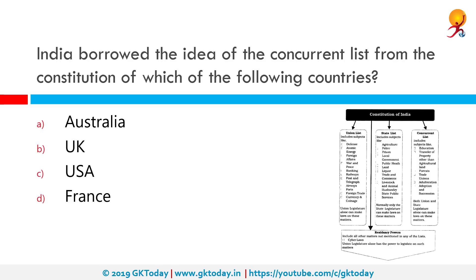India borrowed the idea of the concurrent list from the constitution of which of the following countries? The correct answer is Australia. The concurrent list, or List 3 of the 7th Schedule, is a list of 52 items — where the last item is numbered at 47 — given in the 7th Schedule to the Constitution of India. It includes powers to be exercised by both the central and the state governments.